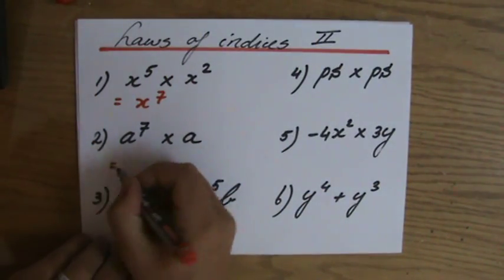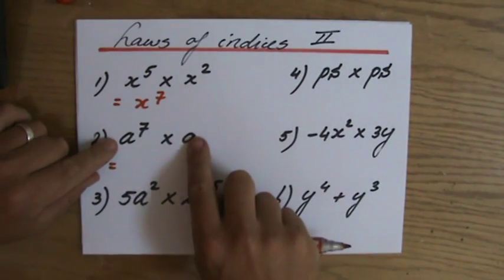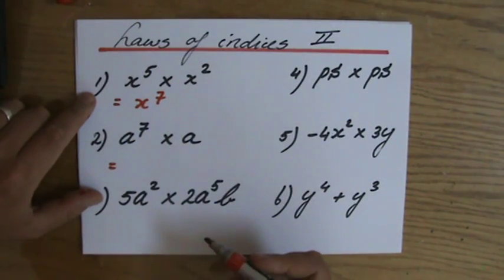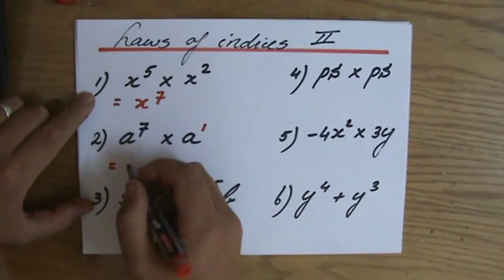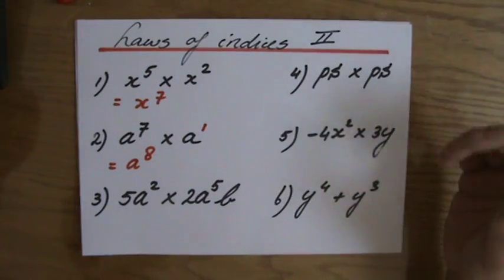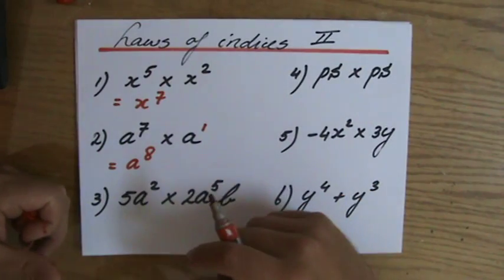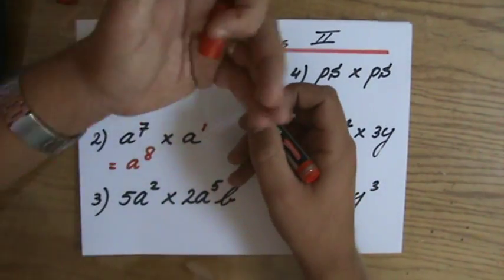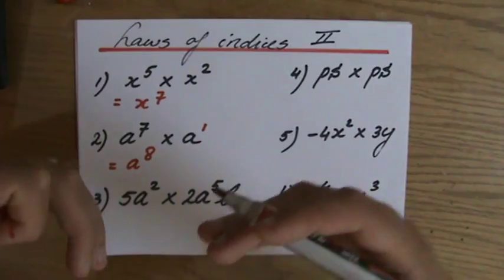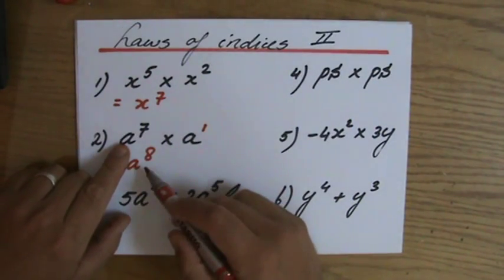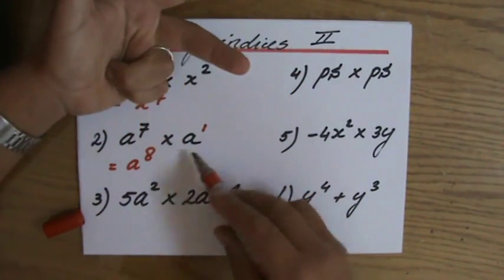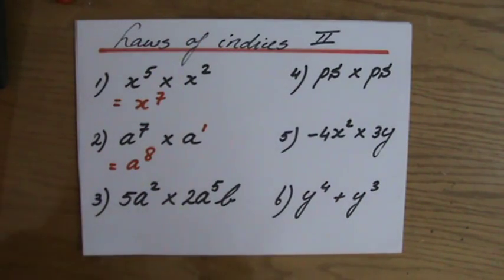Now the first one: a to the power 7 times a. Those bases are the same and we're multiplying, but what do we add? What is the index of a? Well, that is to the power of 1. So the answer is a to the power 8. We never write 'to the power 1' — we could put it everywhere but we don't. We only write the index if it is something other than 1. So if it just says x or a, that means a to the power 1 or x to the power 1. The answer here is a to the power 8.